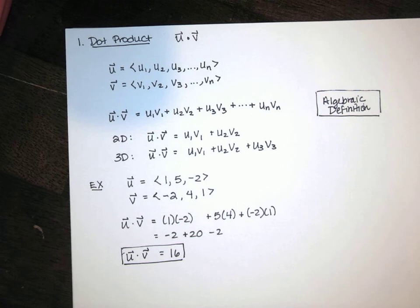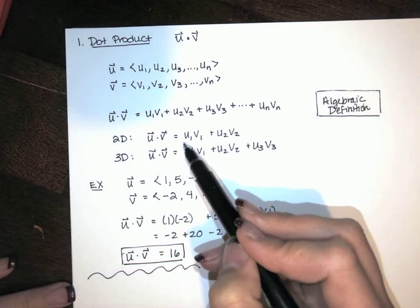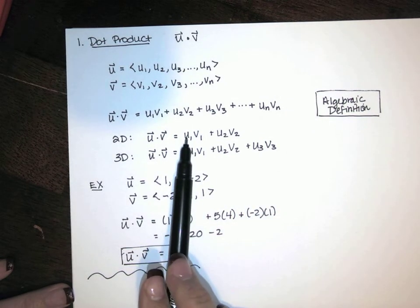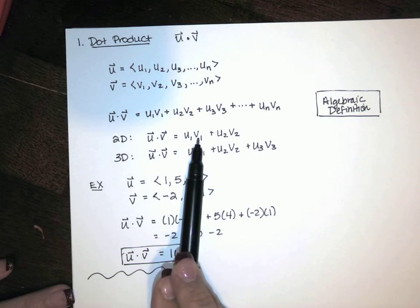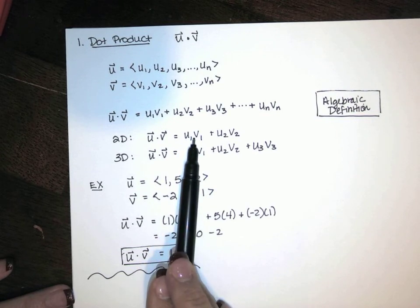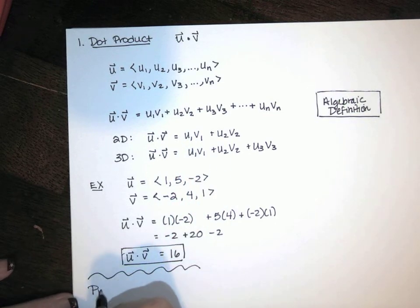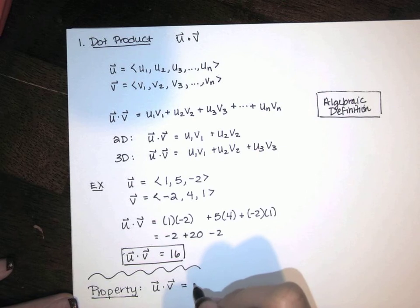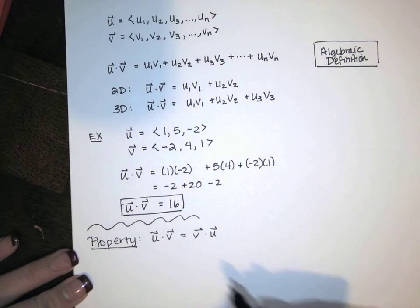In order to interpret what that means, we need the geometric definition of the dot product. But before we get there, I want to show a couple more properties. Multiplication is commutative — these are just real numbers, so I can multiply in any order. So the dot product of u and v is equal to the dot product of v with u. Dot products are commutative.